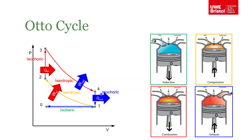When it gets to the bottom — state four on our PV plot — the exhaust valve opens and the piston is pushed back up again. Because the exhaust valve is open, we push out the exhaust gases into the exhaust. These exhaust gases still have some residual heat, so we can think of this as extracting heat from the system isochorically, at constant volume. We've now returned to our original state — we've inducted air, combusted it, extracted work from it, and exhausted it.